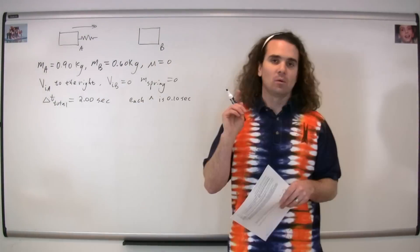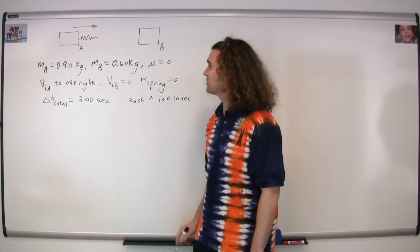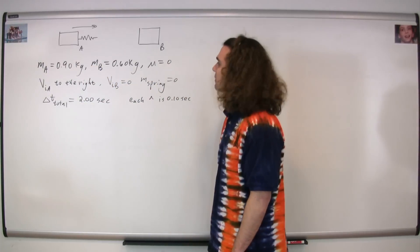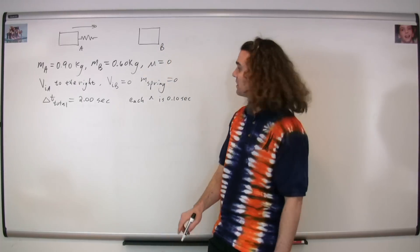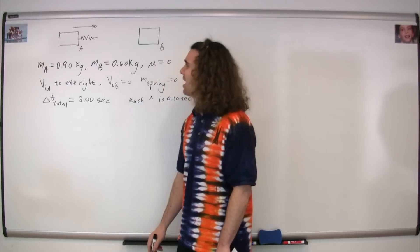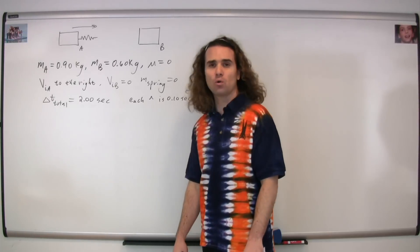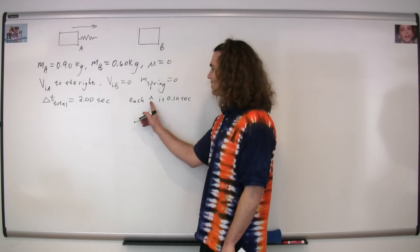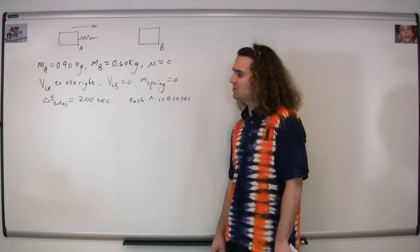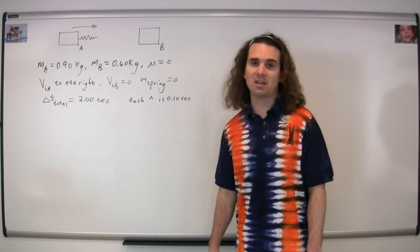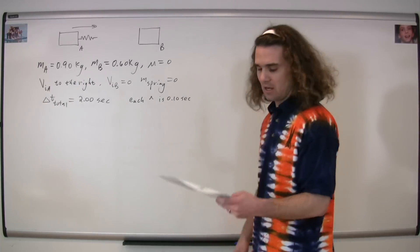We have two gliders. The mass of glider A is 0.90 kilograms, and the mass of glider B is 0.60 kilograms. They're sliding on something that's completely frictionless. The initial velocity of A is to the right, and the initial velocity of B is 0 because it's at rest. There is a spring attached to block A. We can see that there are two seconds of total time illustrated, each tick mark being 0.10 seconds. It's important to realize this is the total time represented, but not the total time for the collision — the collision actually lasts for less than two seconds.